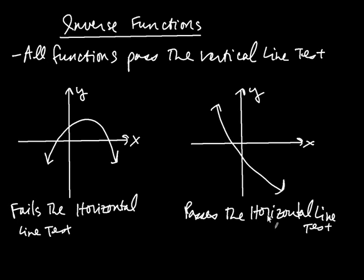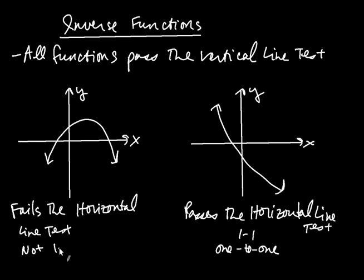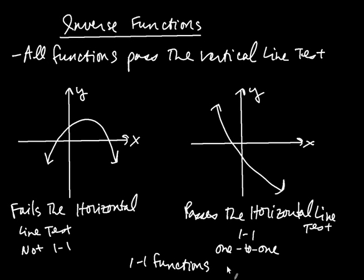When you have a function that passes the horizontal line test, we say the function is one-to-one. You can write it out: the function is one-to-one. This other function over here is not one-to-one. What's the significance of being one-to-one? If a function is one-to-one — that is, if a function passes the horizontal line test — the function also has what we call an inverse function. One-to-one functions have inverse functions.